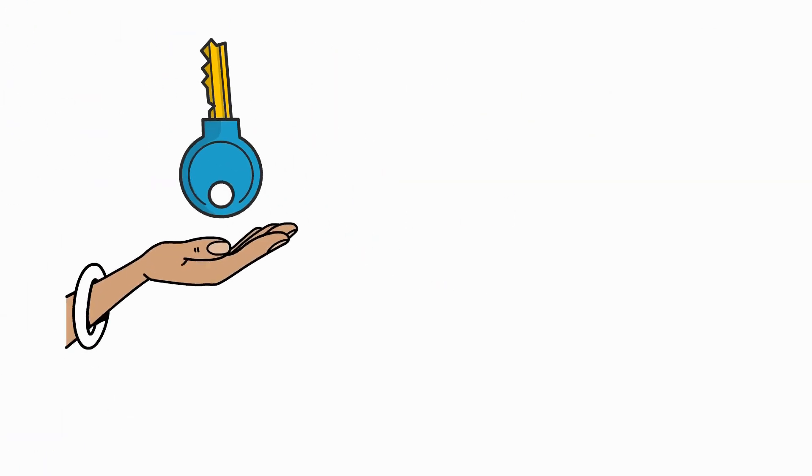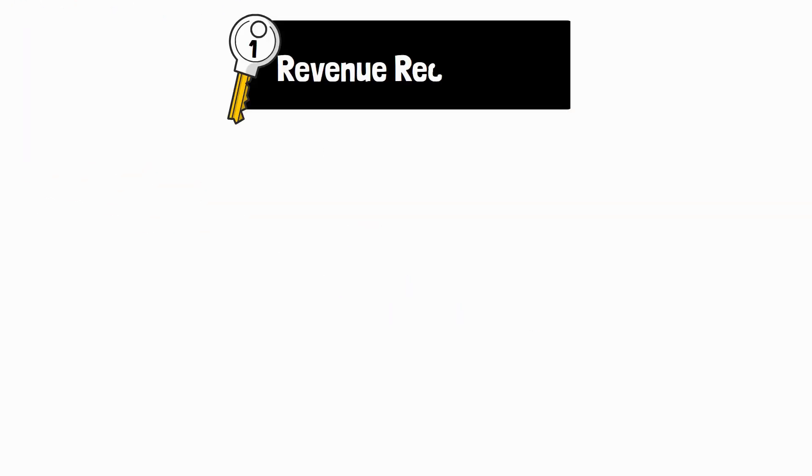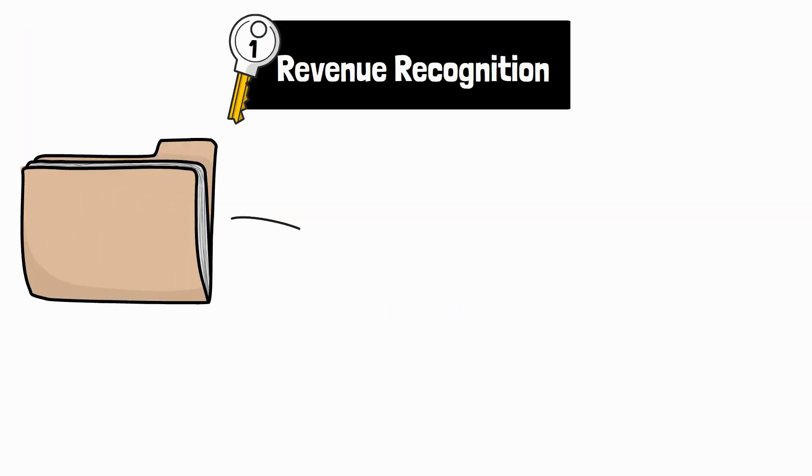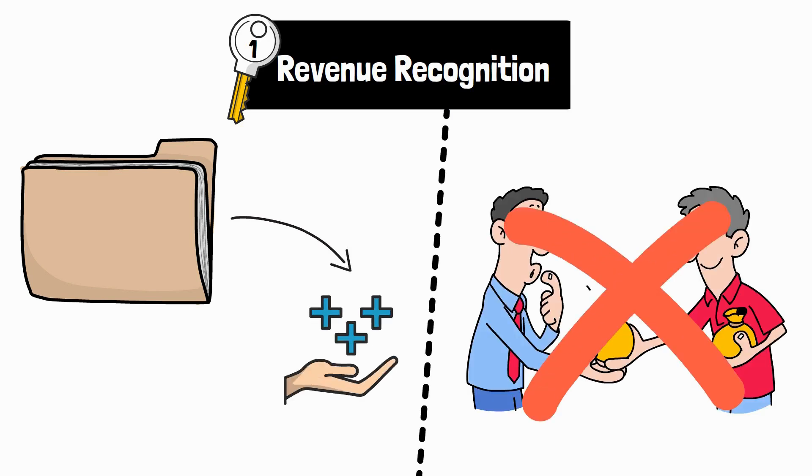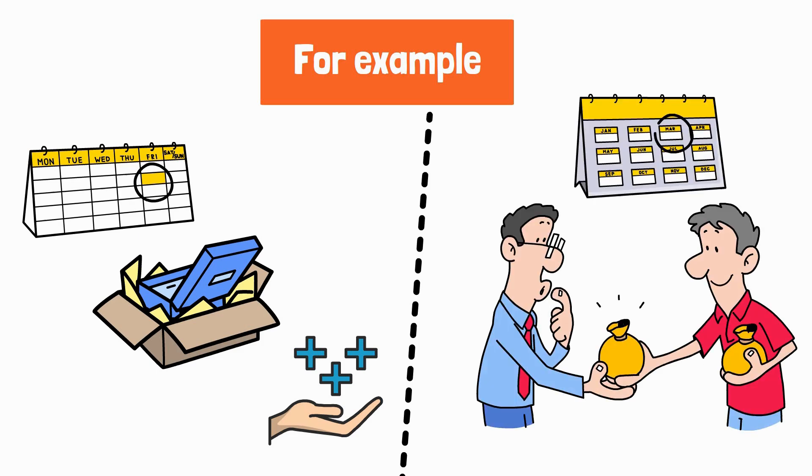Let's look at a few key terms you'll hear often in accrual accounting. One, revenue recognition. This means you record the revenue when it's earned, even if you haven't been paid for it yet. For example, you deliver a product today, you recognize that revenue today, even if the client pays you next month.